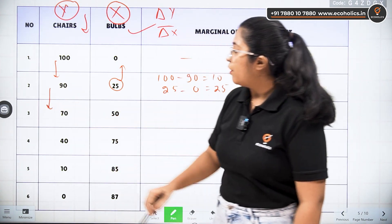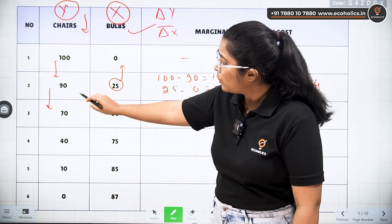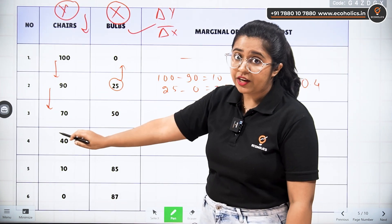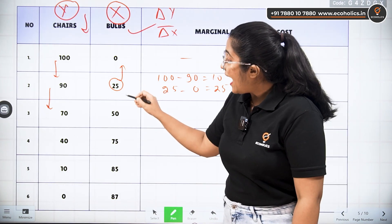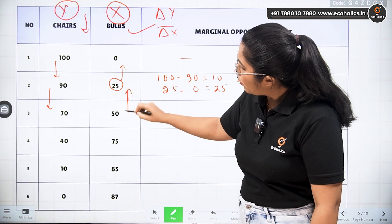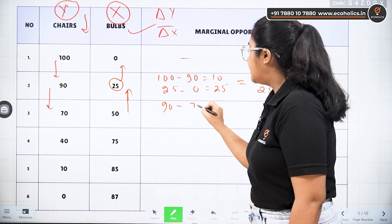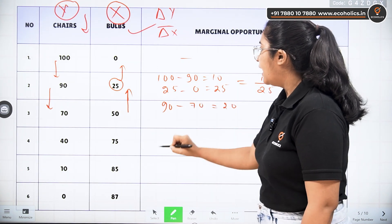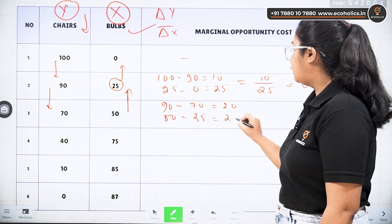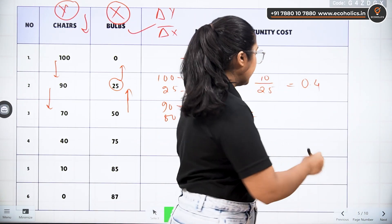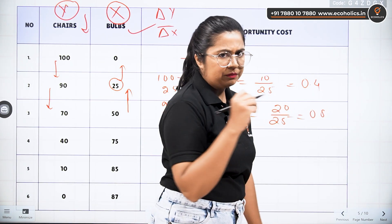For producing more bulbs, we need to reduce from 90 chairs to 70 chairs — meaning 20 chairs are sacrificed to gain 25 more bulbs. So 90 minus 70 gives 20, and 50 minus 25 gives 25. Here we have 20 upon 25, which is about 0.8.